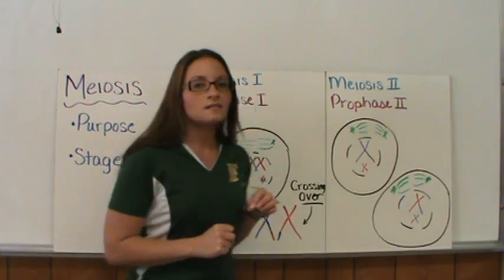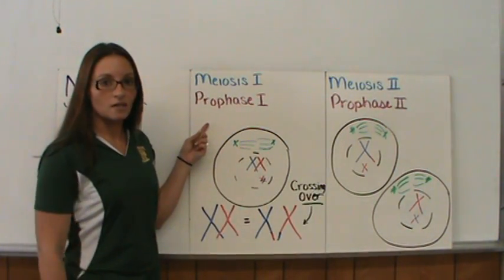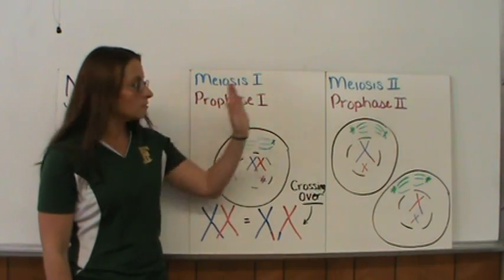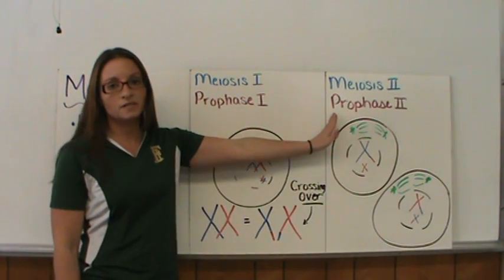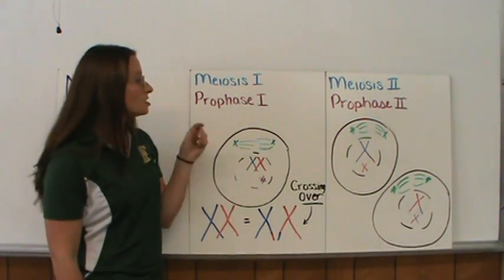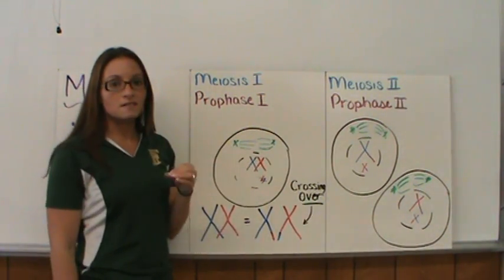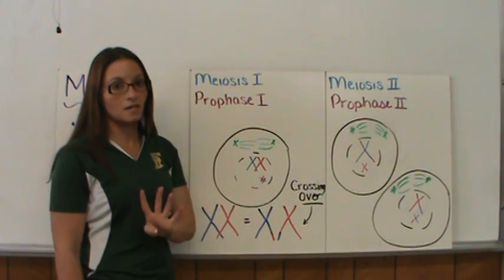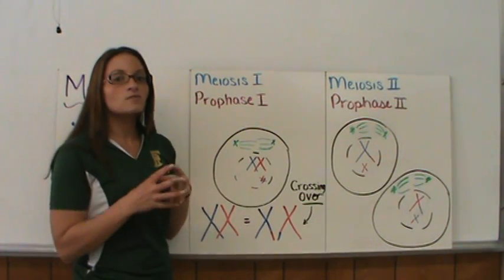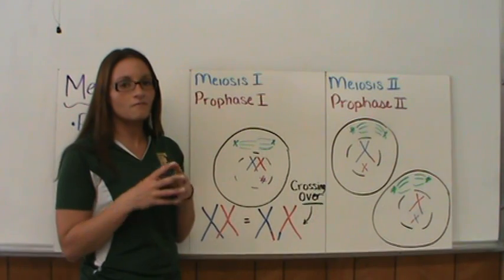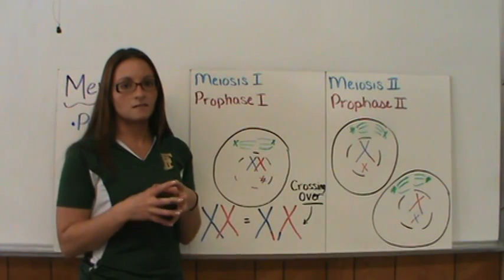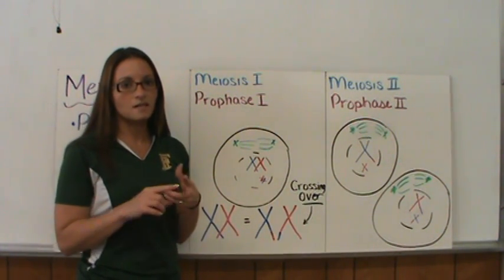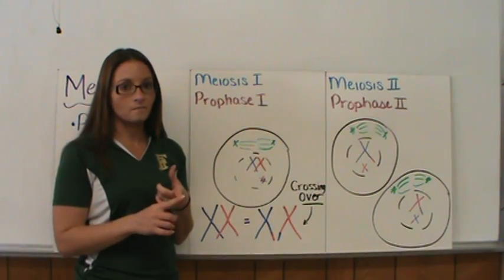Meiosis has two complete phases, and each of those phases has four individual phases within it. Those four phases are the same phases as mitosis: prophase, metaphase, anaphase, and telophase.